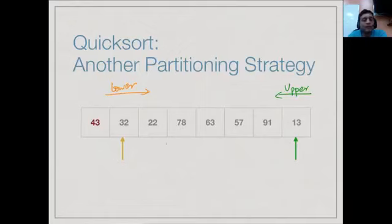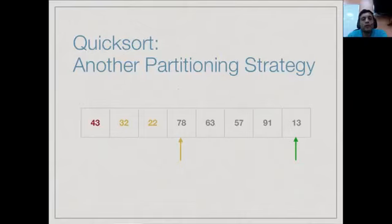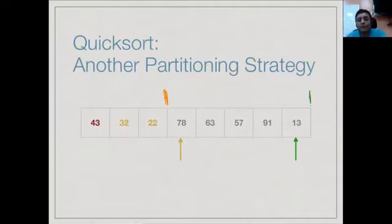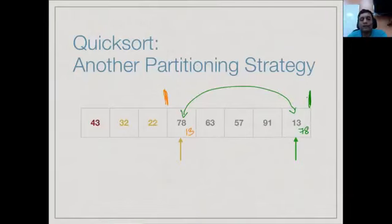At this point the upper limit is at 13's position. We exchange these two values: 13 and 78 swap. After the exchange, 13 is now in the lower region and 78 is now in the upper region, and we shift both boundaries inward by one. This is the basic step in this partitioning strategy — exchanging the misplaced lower element with the misplaced upper element and extending both partitions.